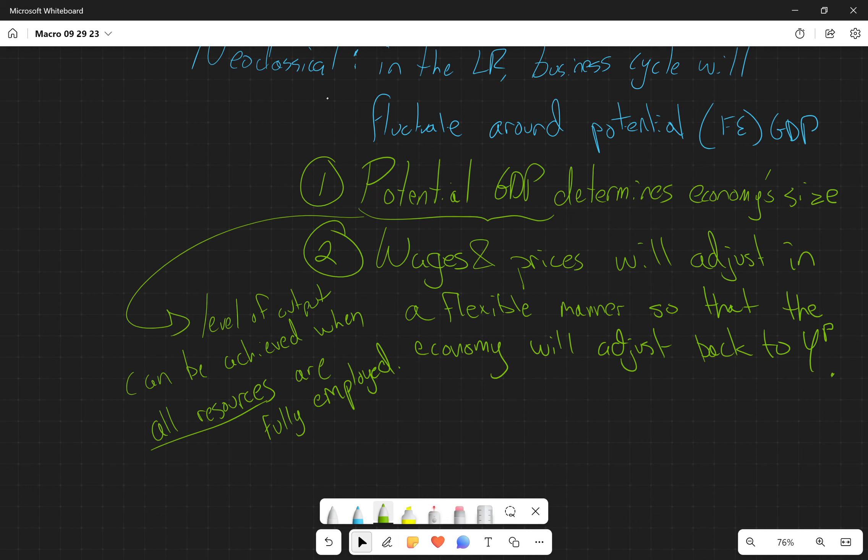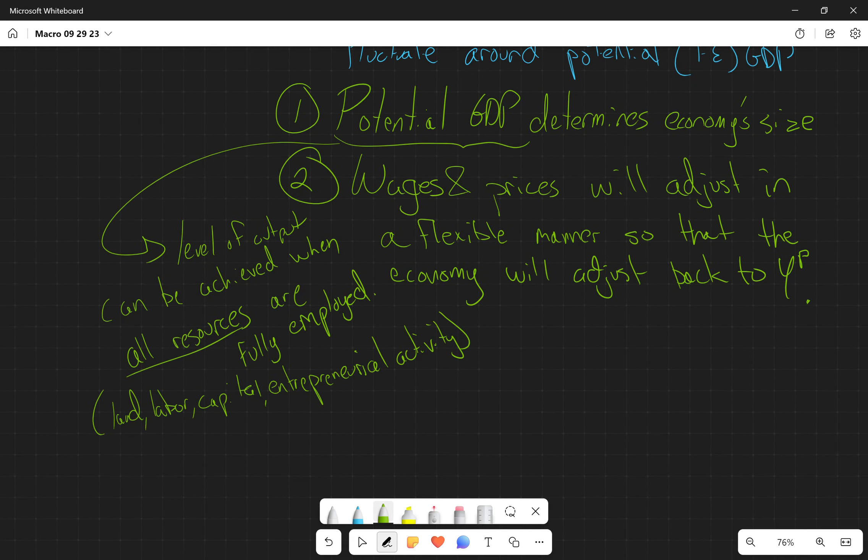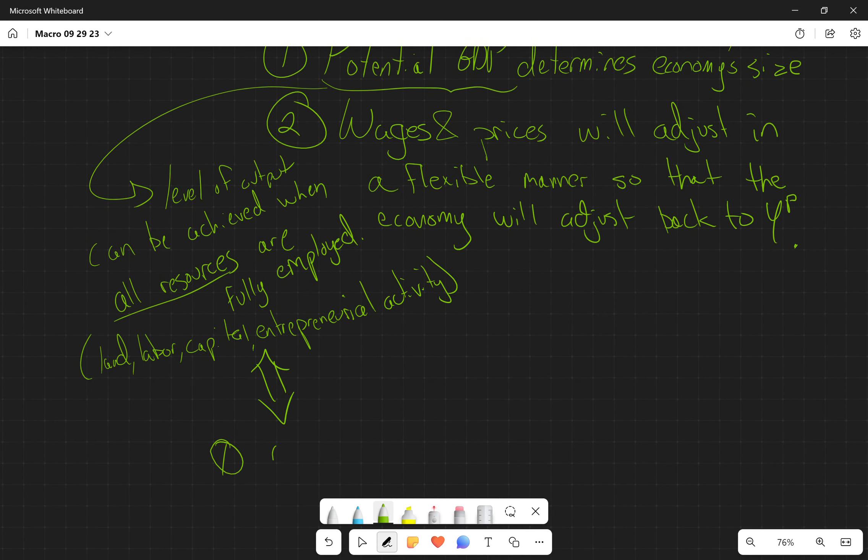So this is all resources, meaning all of the land, all of the labor, all of the capital, and all of the entrepreneurial activity. We know that the unemployment rate in labor markets is never going to be zero. It's going to be three to five percent. But again, that three to five percent has to do with frictional and structural unemployment. So this potential GDP, this level of output, corresponds to zero cyclical unemployment. No unemployment due to fluctuations in the real business cycle or business activity.